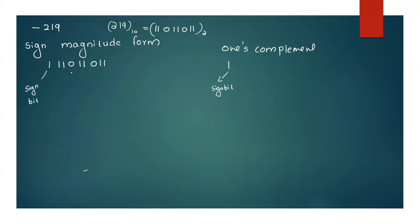One's complement form is 00100100. That is the one's complement. This is the two's complement. The two's complement is 00100100 plus 1. That is 00100101. This is the two's complement. This is the one's complement.